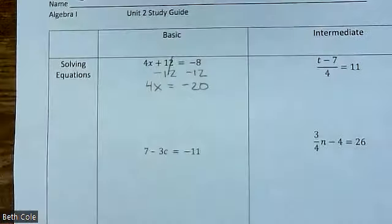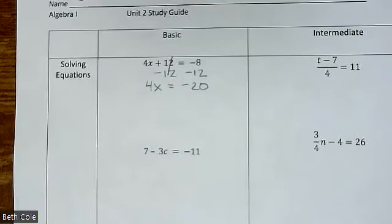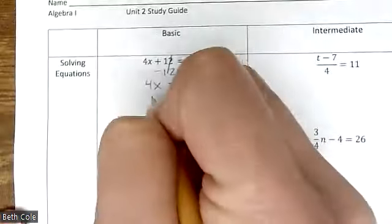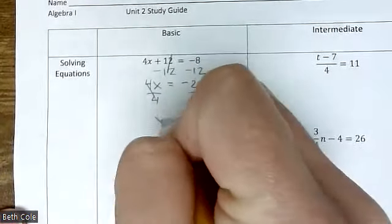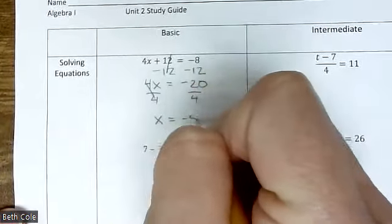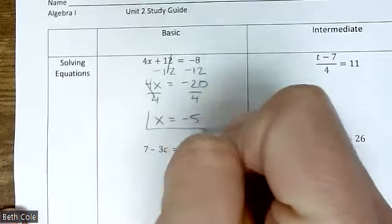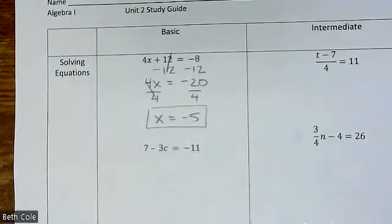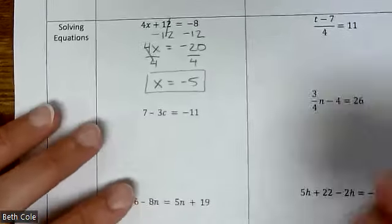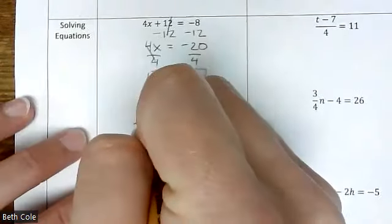Negative 8 and negative 12 would give you negative 20. I like the Chromebooks put away while I'm directly teaching because that's a respect thing, but obviously on the test you'd be allowed a calculator. Then divide by 4 and x equals negative 5. You've got to show all your steps. For number two, first step you're going to subtract 7.